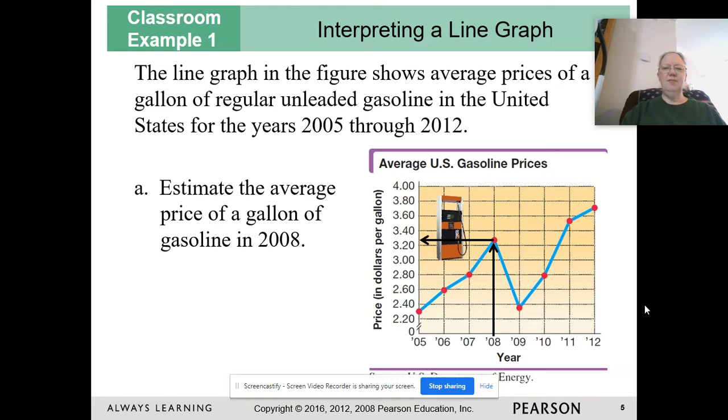The line graph in the figure shows average prices of a gallon of regular unleaded gasoline in the United States for the years 2005 through 2012.